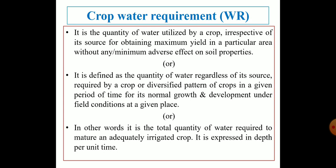Crop water requirement can also be defined in a number of ways. It is defined as the quantity of water, regardless of its source, required by a crop or a diversified pattern of crops in a given period of time for its normal growth and development under field conditions at a given place. Simply put, it is the total quantity of water required to mature an adequately irrigated crop, and it is always expressed in depth per unit time.